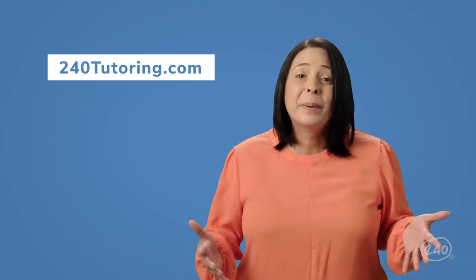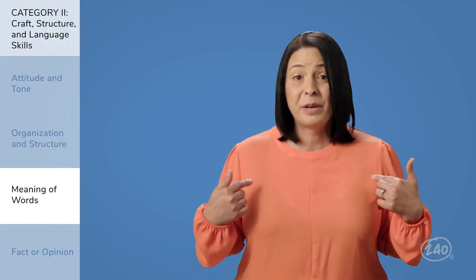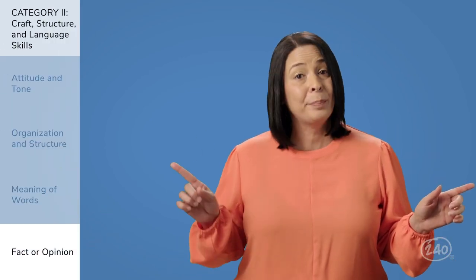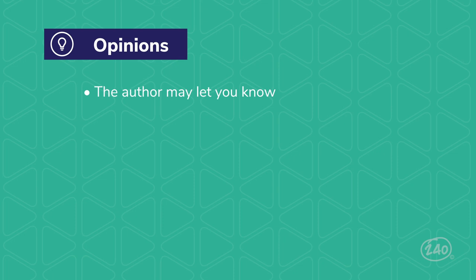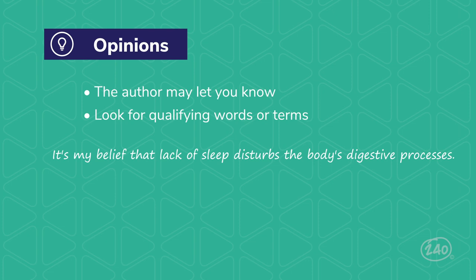Now for the fact or opinion portion. Sometimes the author will directly let you know they're stating an opinion — look for phrases like 'I believe' or 'I think.' Opinions use qualifying words or terms that modify the meaning of words, such as very, usually, always, and never. For example: 'It's my belief that lack of sleep disturbs the body's digestive processes.' The author directly tells us it is a belief, not a fact — that's an opinion.